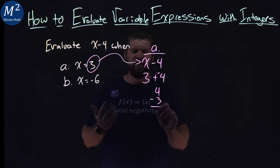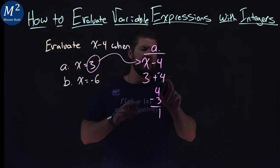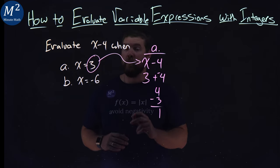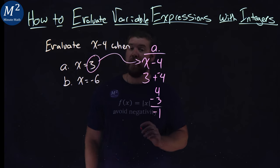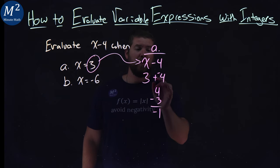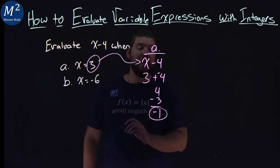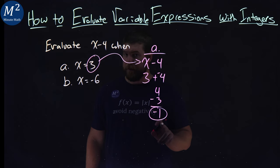4 minus 3, that's an easy answer, that's 1. But since 4 is more negative than 3 is positive, it's a negative 1. And so, 3 minus 4, or 3 plus a negative 4, is negative 1.